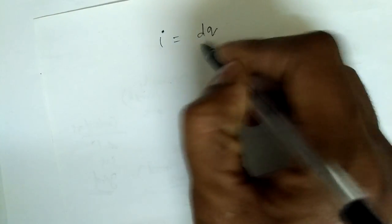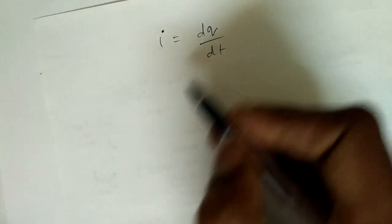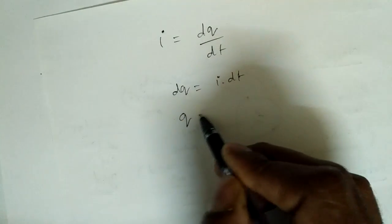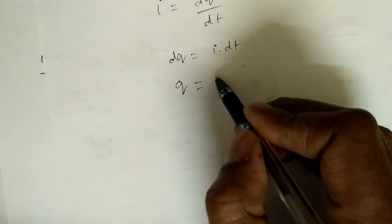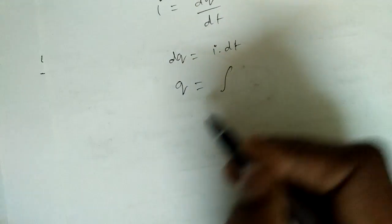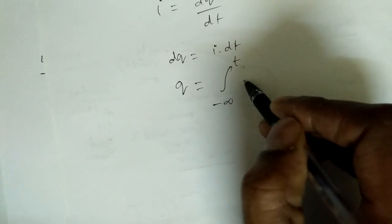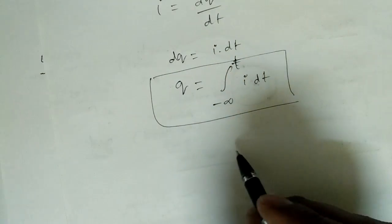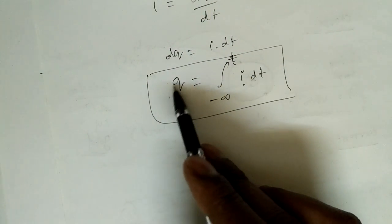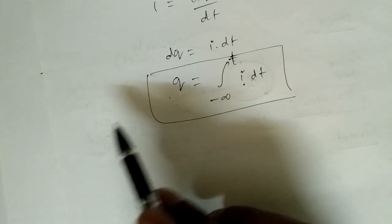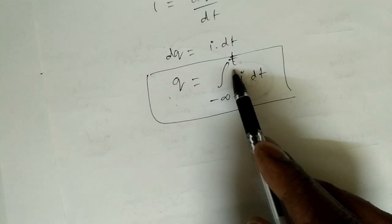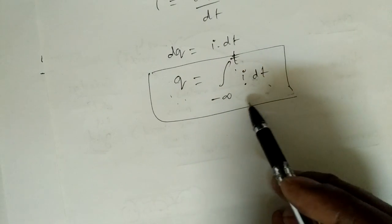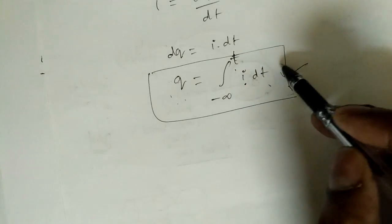From i = dq/dt, we get dq = i · dt. To find the total charge from the start to a present instantaneous time, we integrate: q = ∫ from −∞ to t of i · dt. If we know the current during a particular operation or experiment, we can find the total charge accumulated or transferred up to the present time. Remember this expression, as questions may ask for charge across an element.